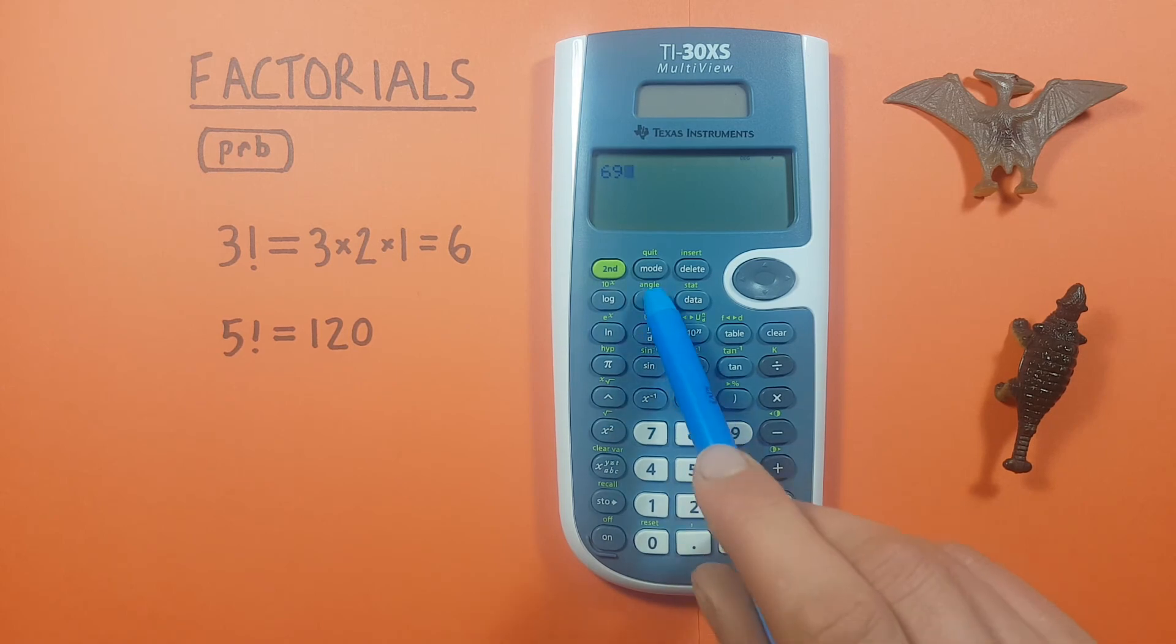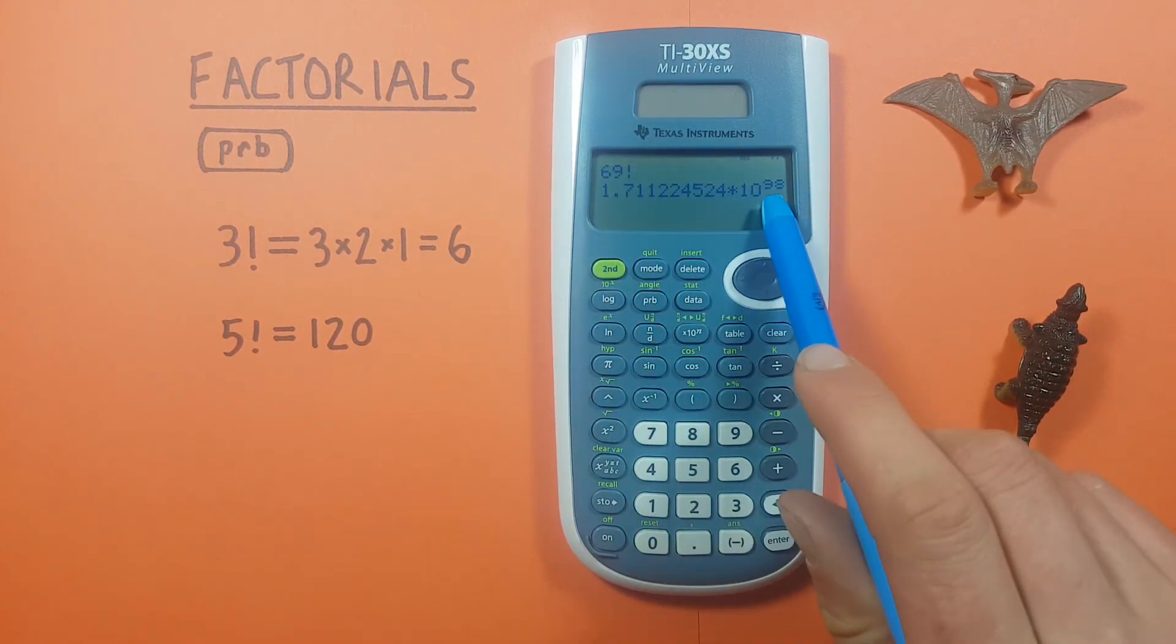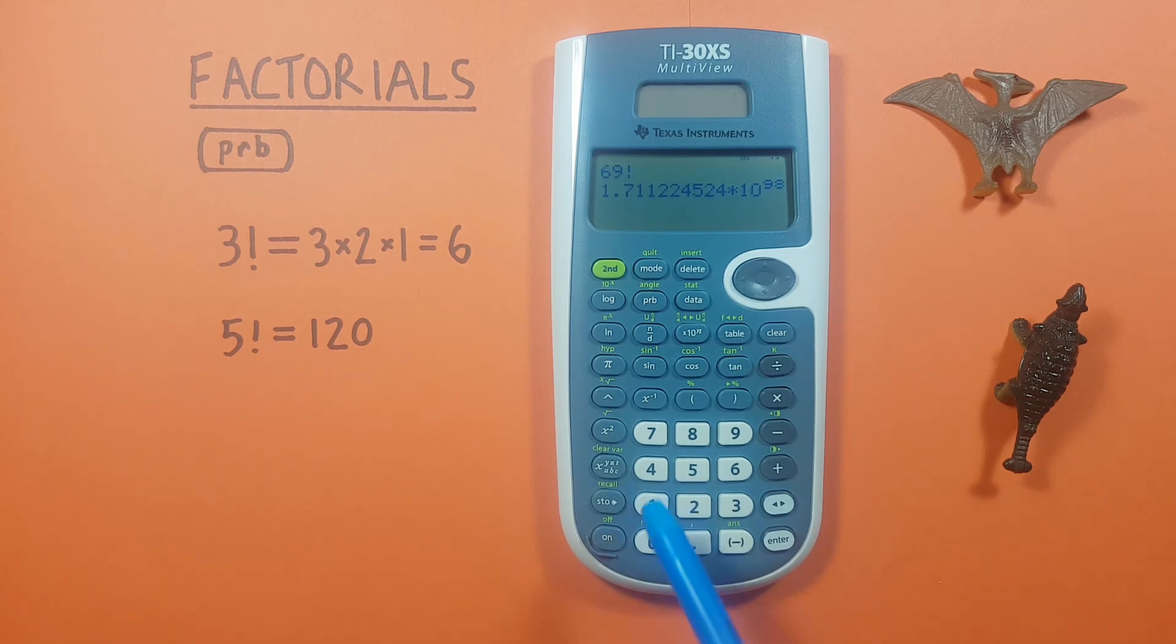You can see we find the factorial of 69 we get that number which is absolutely huge. But if we try for 70 we get the error again.